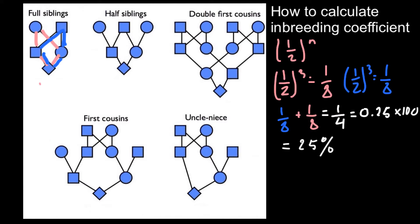Now let's calculate the inbreeding coefficient for this next pedigree. Here we see a male who had two marriages — in one marriage he had a son, and in the other he had a daughter — and they marry and have a child of unspecified gender. Breeders use these techniques very frequently in order to breed new varieties or cultivars. Here we have half siblings.